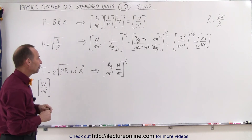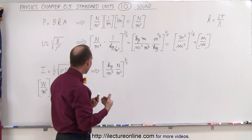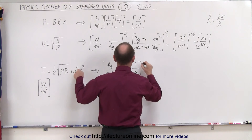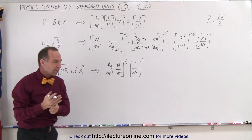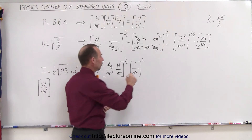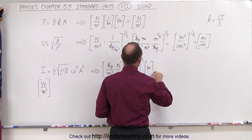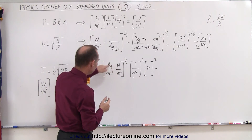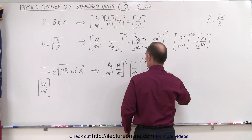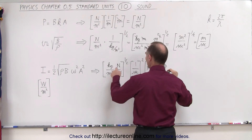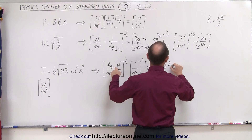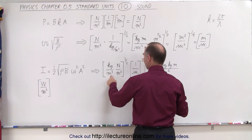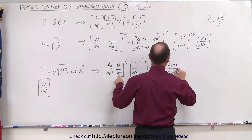Next, the angular frequency has units of 1 over seconds, and we square that to get 1 over seconds squared. Amplitude is a linear measurement in meters, squared to give meters squared. Combining under the radical: kilograms times newtons (kilograms·meters per second squared) over meters cubed, times meters squared — giving meters to the fifth power in the numerator.